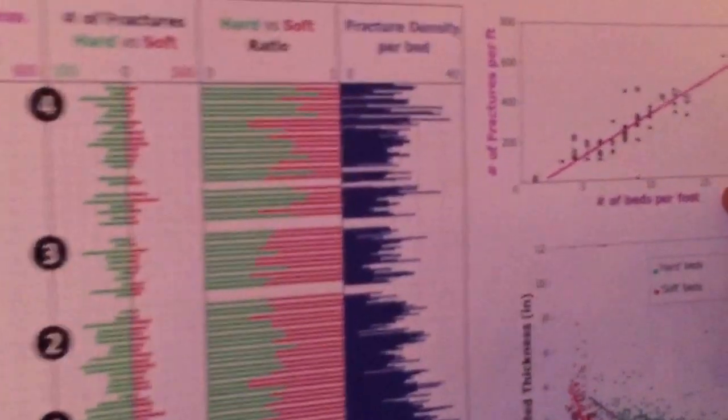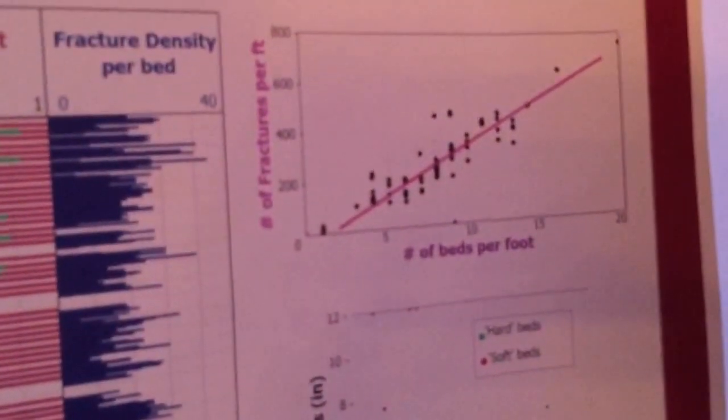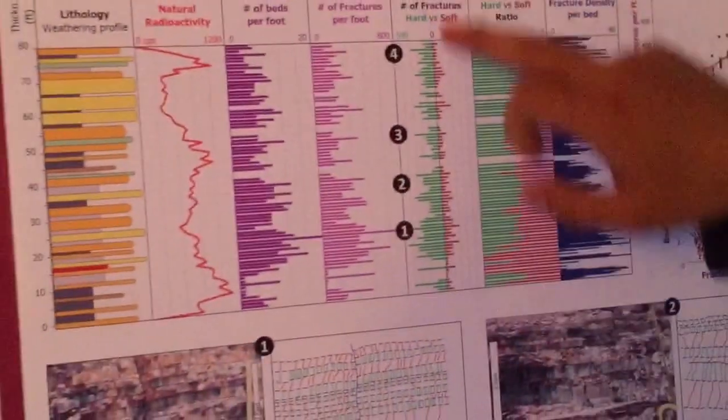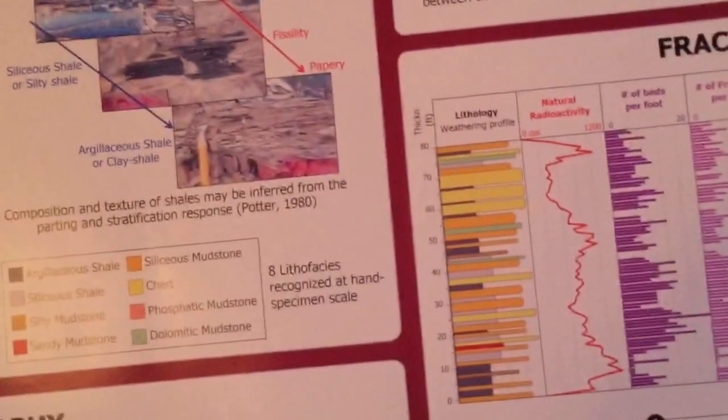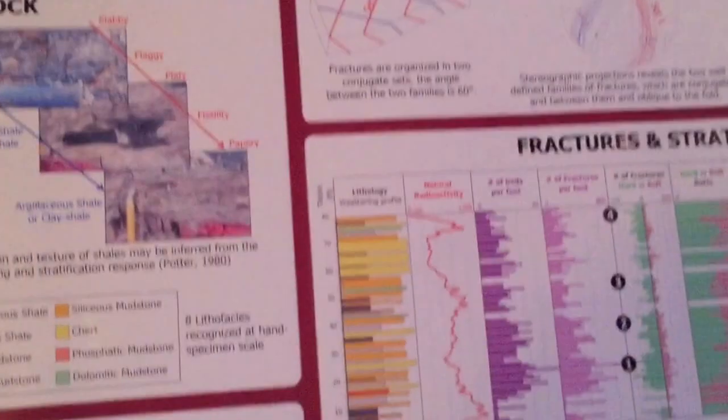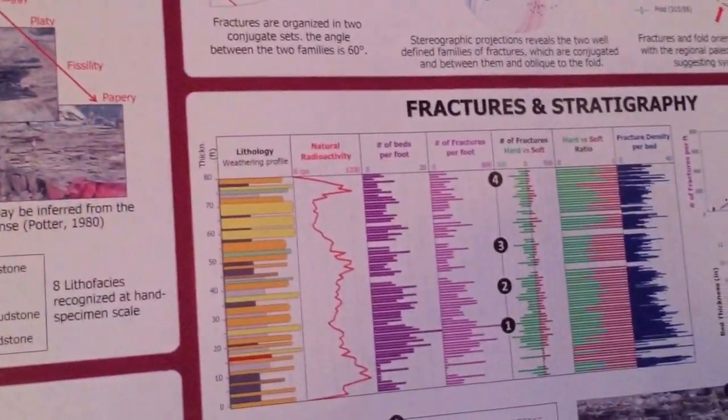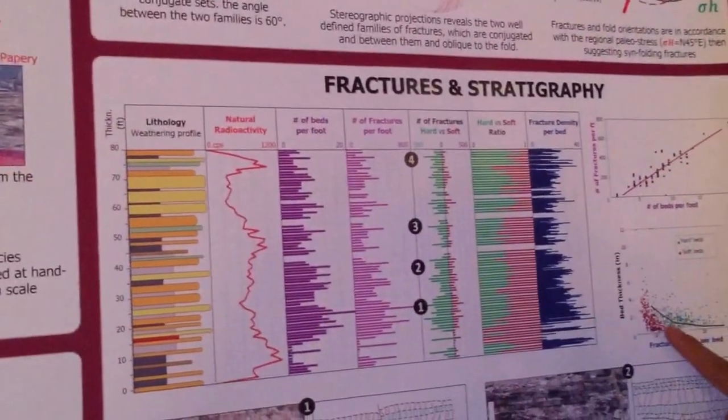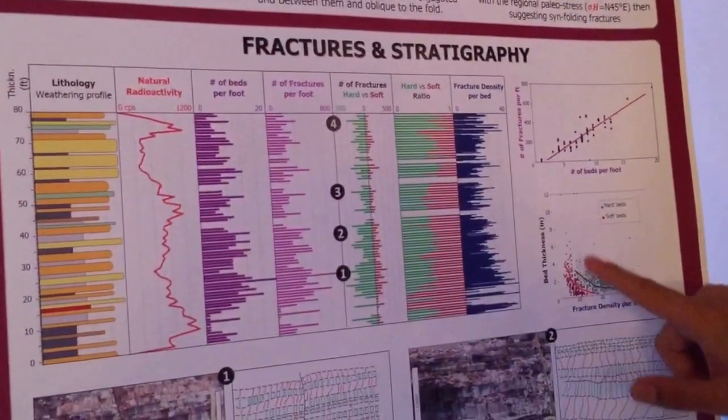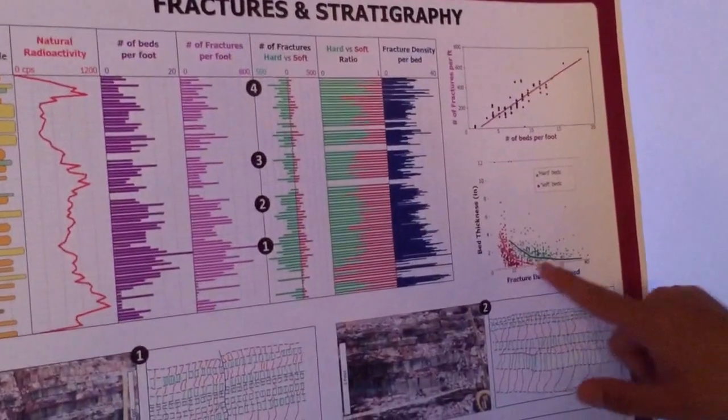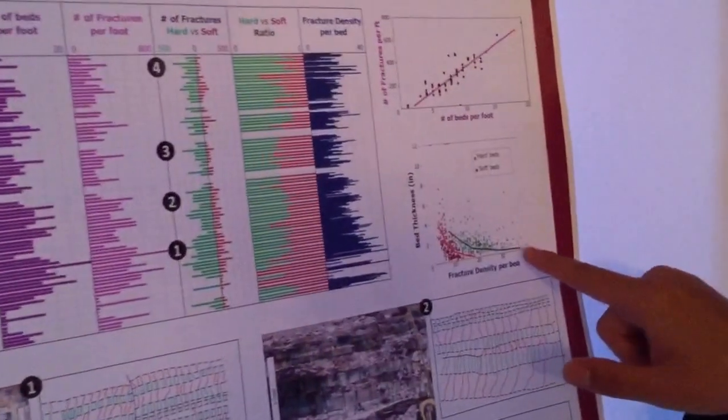Also, the more beds per foot means thinner beds. We recognize that the fracture density is our final conclusion because we have two main clusters: the thin beds and the thicker beds. The less bed thickness, the more fracture density we have.